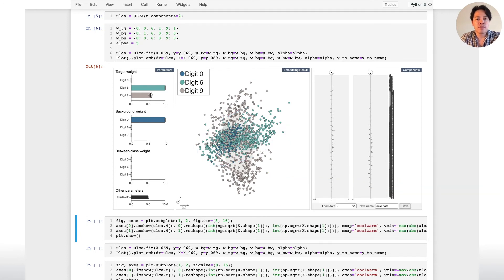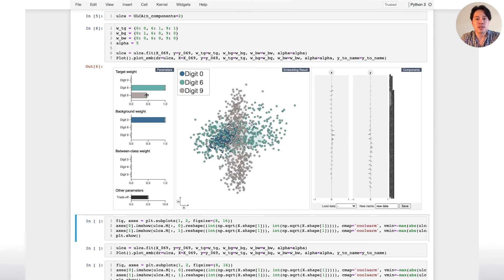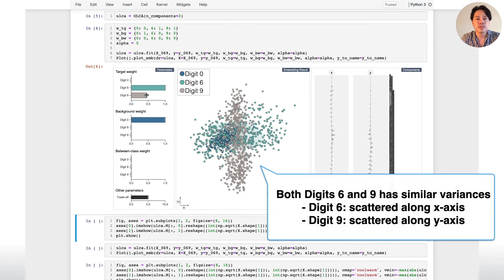To produce similar variances for both digits 6 and 9, we interactively reduce the related weight for digit 9. Now, both digits 6 and 9 have similar variances, and they are more scattered along x and y-axis, respectively.